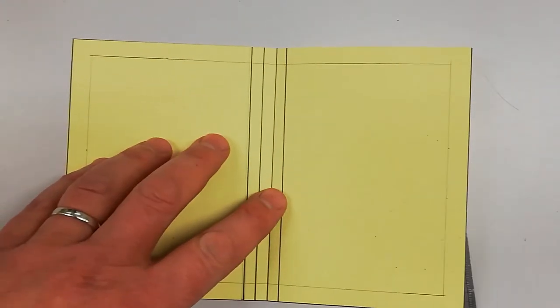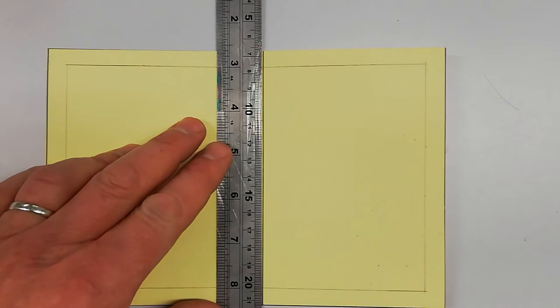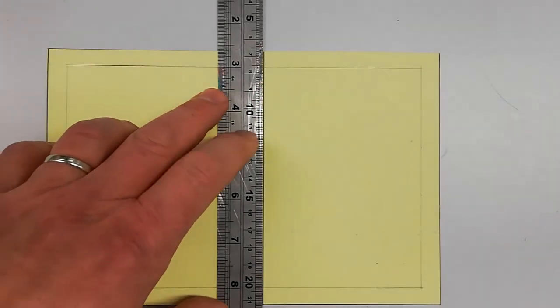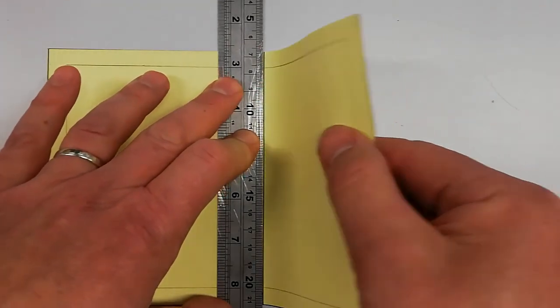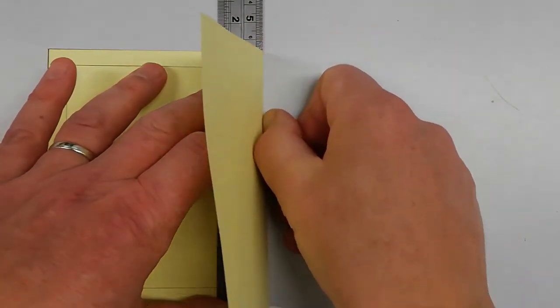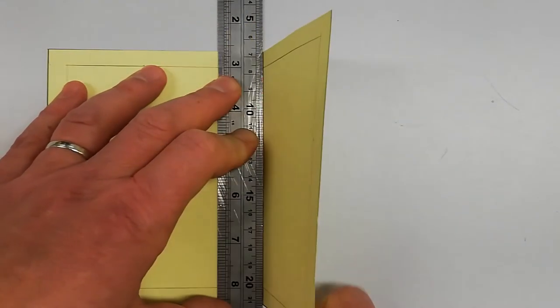Open it up and put the ruler on the outer line. Do the same again. Lift up the page using a clean thumbnail, push against the ruler.